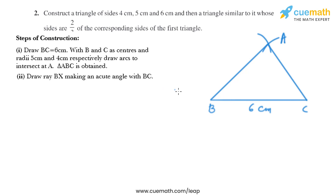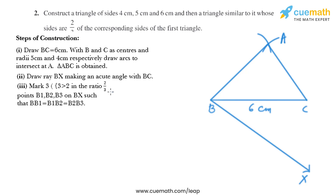In the next step, draw ray BX making an acute angle with BC. So we draw ray BX like this and name this point as X.